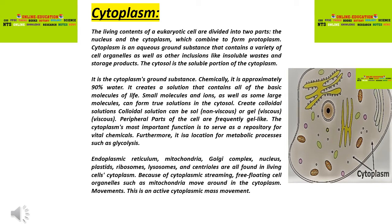The cytoplasm exists in two states: sol and gel. Sol is non-viscous and gel is viscous. The peripheral parts of the cytoplasm are viscous.